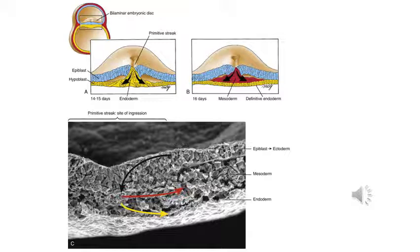The ectoderm is the top layer and it eventually forms the nervous system and the epidermis, which is the top layer of the skin, so you can remember that easily.